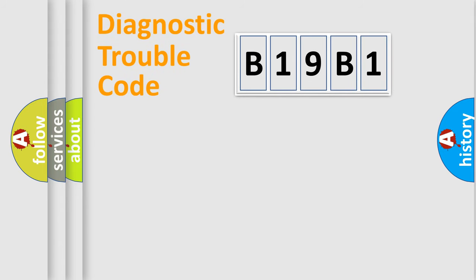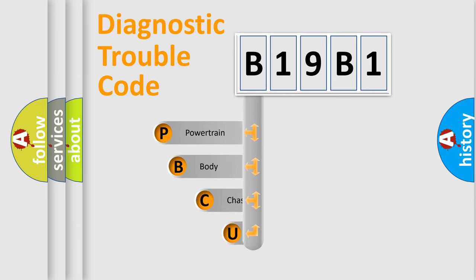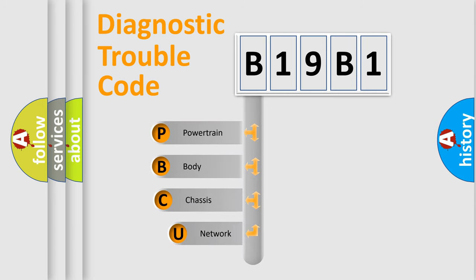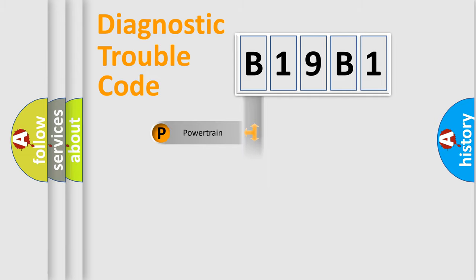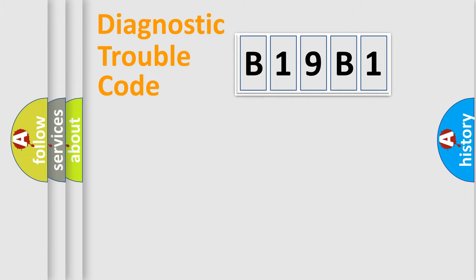Let's do this. First, let's look at the history of diagnostic fault code composition according to the OBD-II protocol, which is unified for all automakers since 2000. We divide the electric system of an automobile into four basic units: Powertrain, Body, Chassis, and Network.